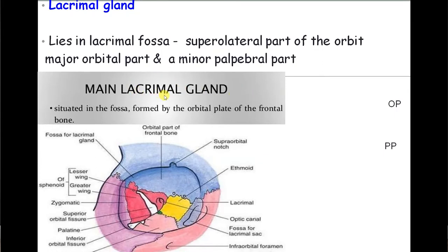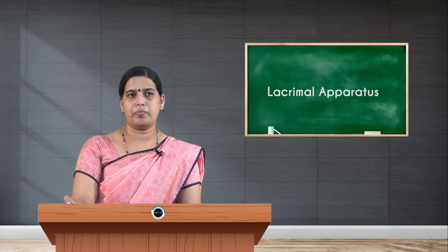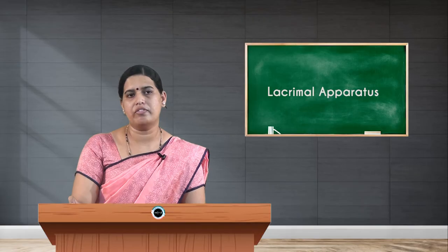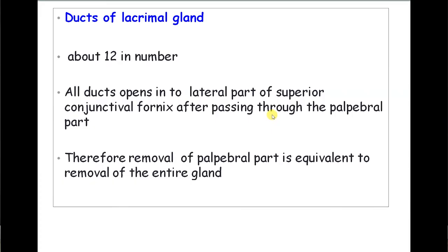The fossa for the lacrimal gland is located on the superolateral part of the orbit. As already mentioned, it has a larger orbital part and a smaller palpebral part, with the levator palpebrae superioris muscle in between. The ducts of the lacrimal gland are approximately 12 in number, crossing the palpebral part and opening into the conjunctival sac. Importantly, the removal of the palpebral part is equivalent to removal of the entire gland itself, because the ducts pass through the palpebral part.